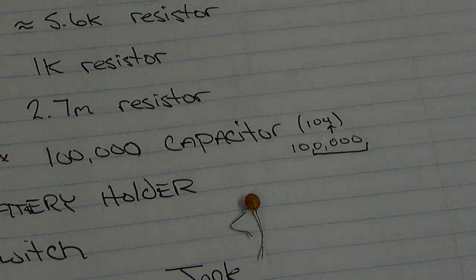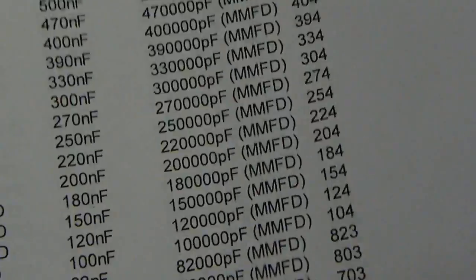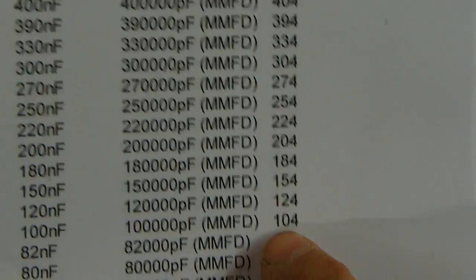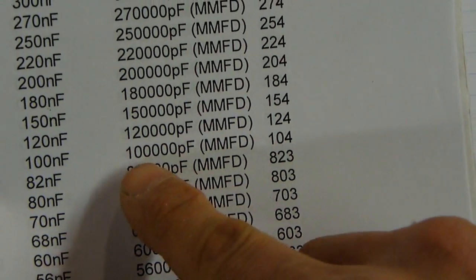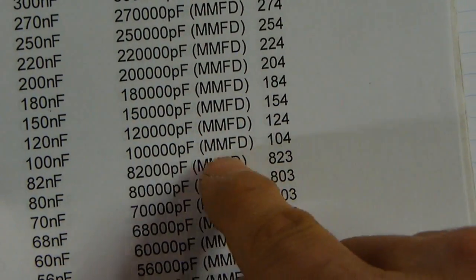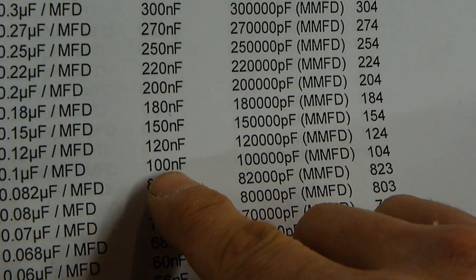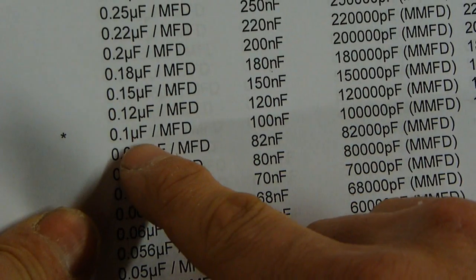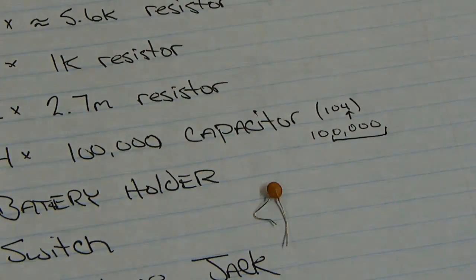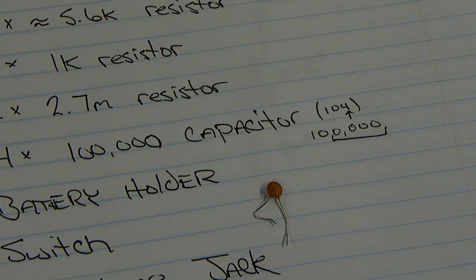Additionally, I keep handy the list of the conversions. So, if, you know, for instance, if I was looking up a 104, that's the code. That's 100,000 picofarads. It's the same as 100 nanofarads, or you could use a 0.1 microfarad. That comes in handy, even though I could do the conversions because it's just 10 to the minus 6, but I like visuals.